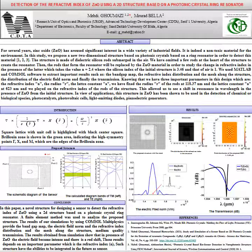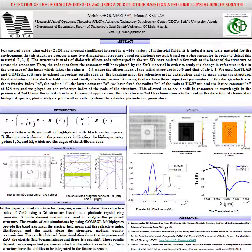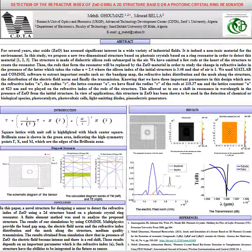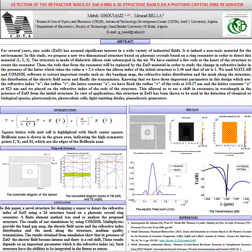We fixed the radius R of the rods at a set value and the lattice constant at 623 nm, and we varied the refractive index of the rods of the structure. This allowed us to observe a shift in resonance wavelength in the presence of ZnO compared to the initial structure.